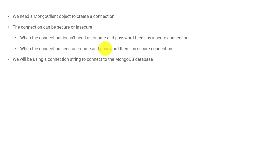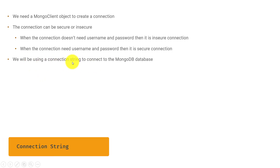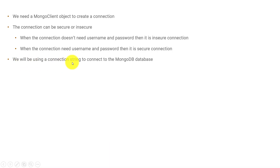There can be different ways to connect to MongoDB, such as using classes with setter and getter methods. But what we will be using is a connection string, which contains all the information needed to connect to the MongoDB database.